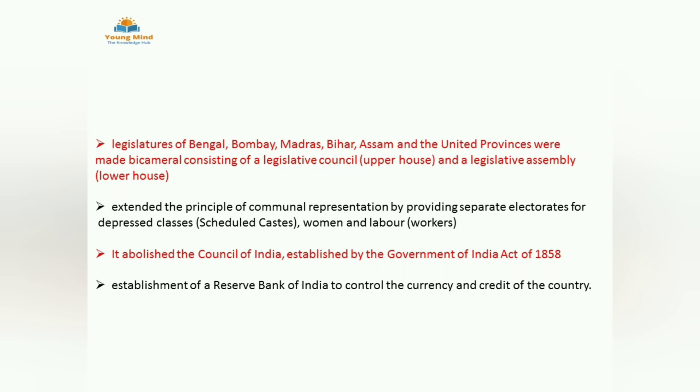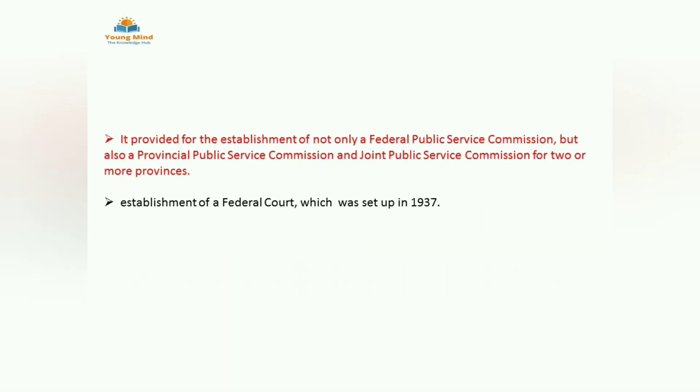This act abolished the Council of India established by the Government of India Act 1858. The Reserve Bank of India was established under this act to control the currency and credit — very important to remember. Federal, provincial, and joint Public Service Commissions came into being. A Federal Court was established, set up in 1937.